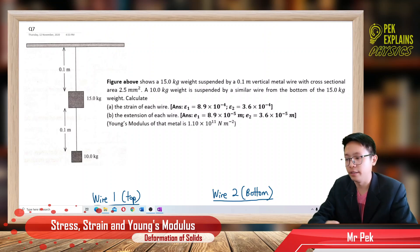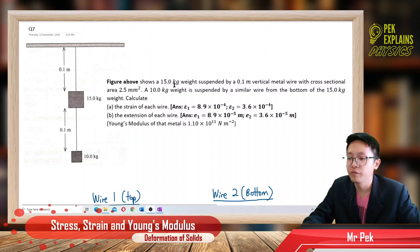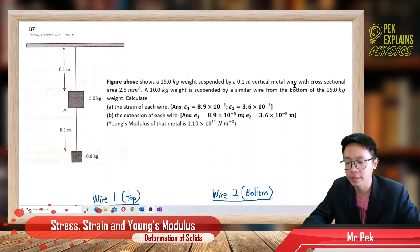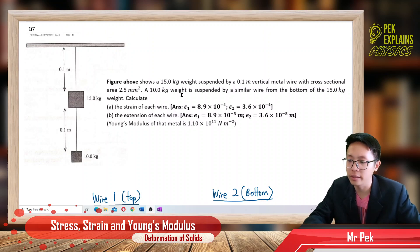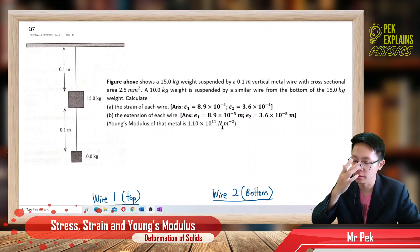Question 7. The figure shows a 15 kilogram weight suspended by a 0.1 meter vertical metal wire with cross-sectional area 2.5 millimeter squared. A 10 kilogram weight is suspended by a similar wire from the bottom of the 15 kilogram weight. Calculate the strain for each wire and the extension for each wire. Young's modulus is given as 1.1 × 10¹¹ Newton per meter squared.